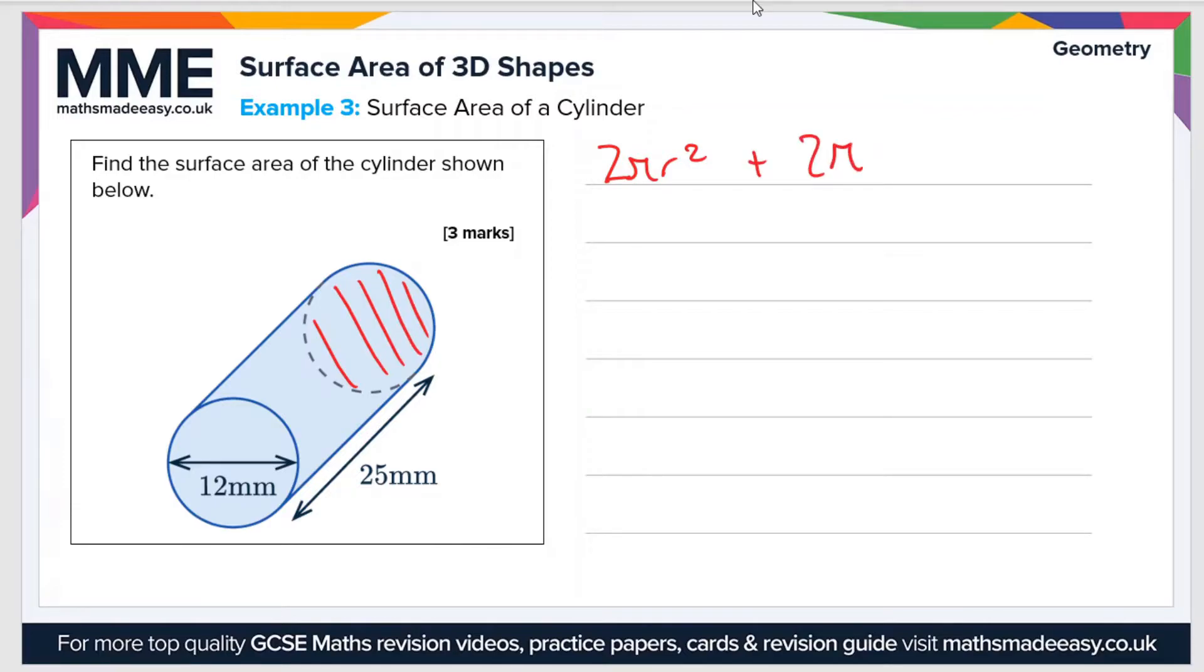h in this case is 25 millimeters, and we need to find the value of r first of all because we've been given a diameter here of 12 millimeters. So r is half of the diameter, so r = 6 millimeters.